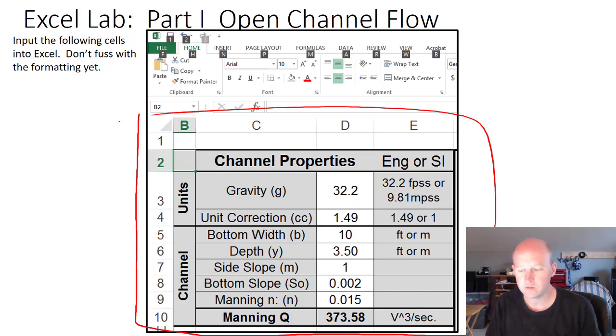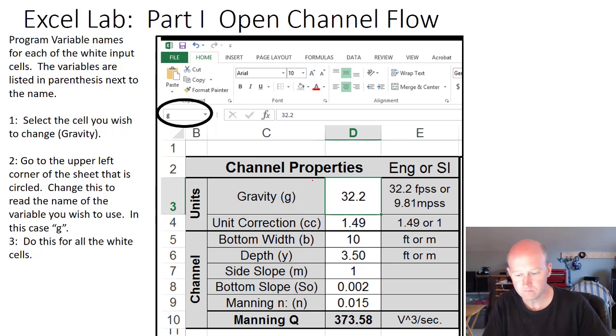Basically, the idea with this page is that the gray items are items that we will not input, and the white items are items that we will input and change. Your goal is to use goal seek. Some of the things that we need to do to make programming this a little bit easier...